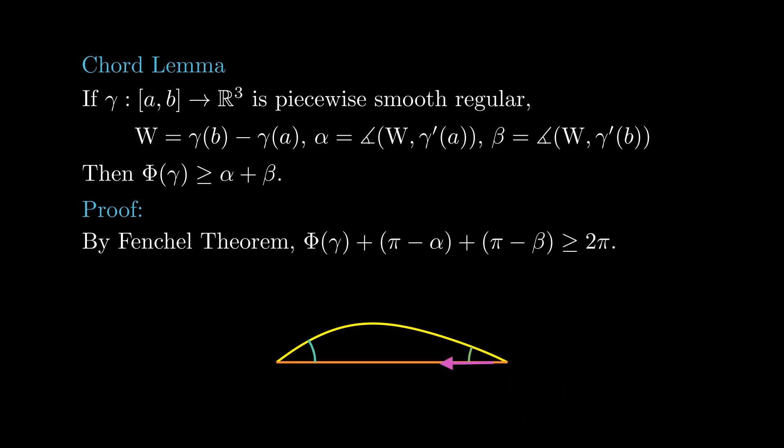then it adjusts by an angle of π minus beta to point towards gamma a, and once it comes back, it adjusts again by π minus alpha to coincide with the initial direction. Cancelling 2π from both sides of the equation, we obtain the result.